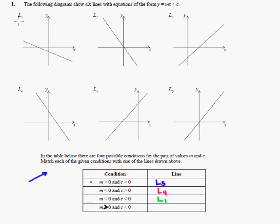For the last one — I had to stop because originally the fourth problem had the same wording as the third, so I checked the mark scheme and it was a misprint. The correct condition is: m is greater than zero and c is less than zero. That's a positive gradient with a negative y-intercept, which is L3. Occasionally there's a misprint, so you just have to deal with it.